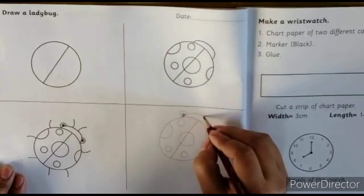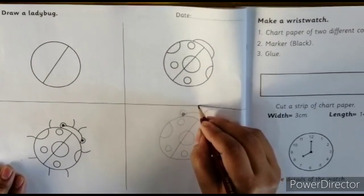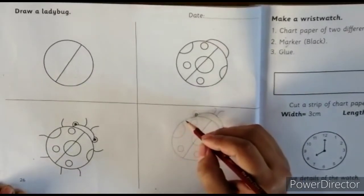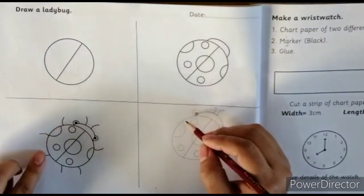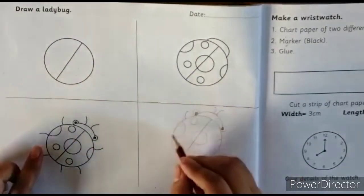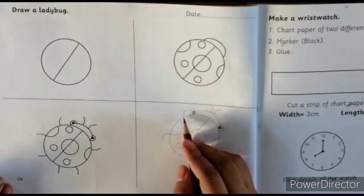Then we make antennas. Now you have to make legs. Count: one, two, three, four, five, six legs. One here and then we make one semicircle.